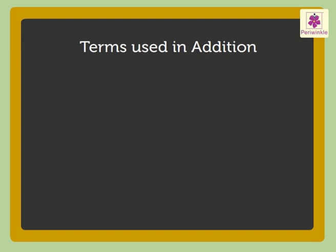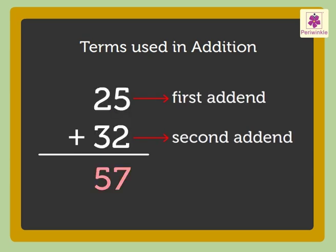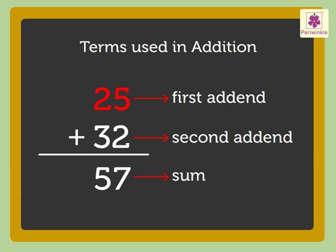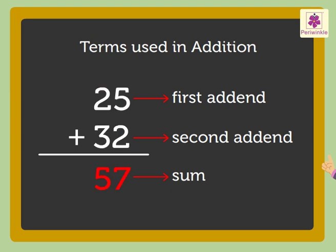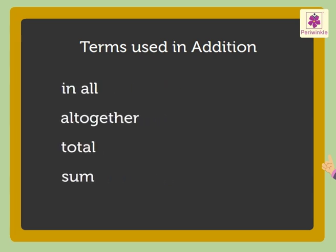Do you know the terms used for the numbers in an addition? The numbers that we add are called addends, and the total we get after adding the numbers is called sum. In the example just solved, 25 and 32 are addends, and 57 is the sum. Remember, the words 'in all', 'altogether', 'total', 'sum' imply addition.